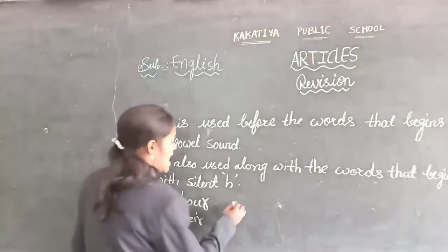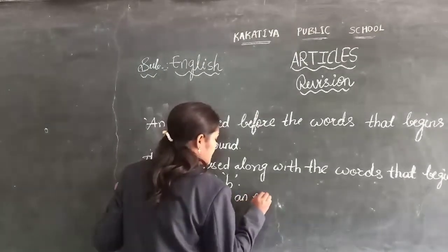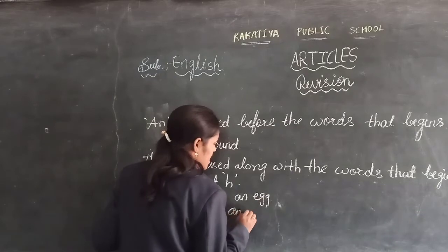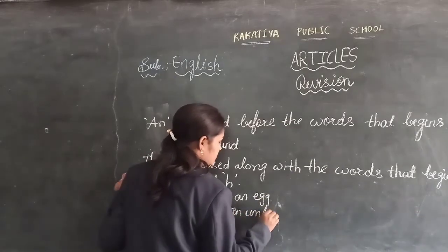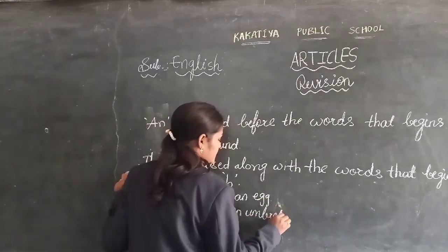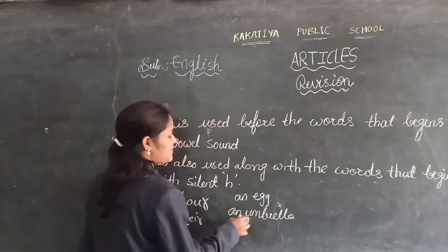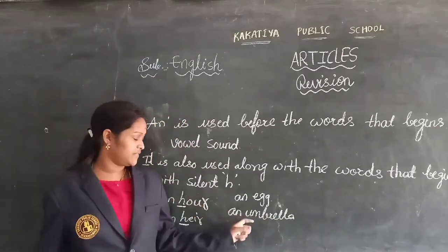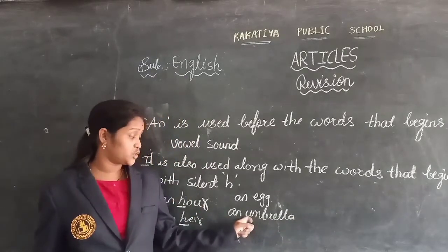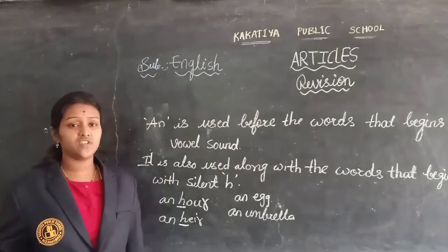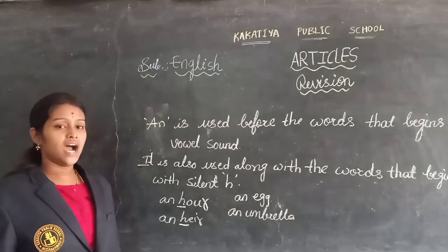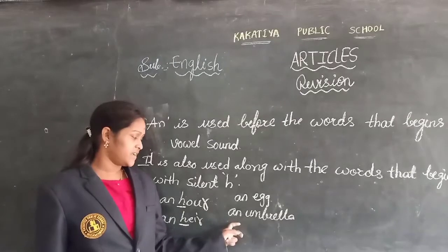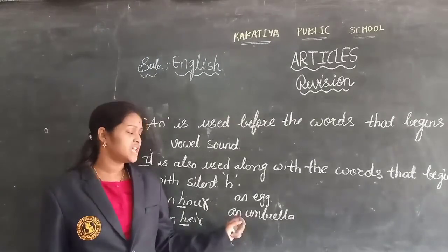More examples: an eagle, an umbrella. When pronouncing 'umbrella,' the U gives us a vowel sound — the sound of A. So that's why we use An. An is used before words that begin with a vowel sound.